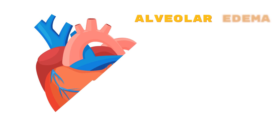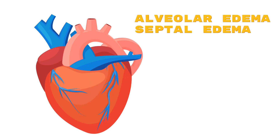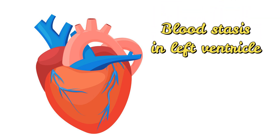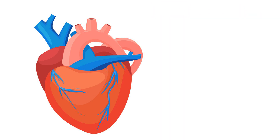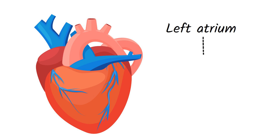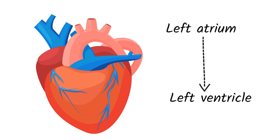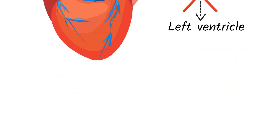A and B stand for edema — that's alveolar edema and septal edema. In heart failure, when the left heart fails there's stasis of blood in the left ventricle, and this creates an increase in the left ventricle pressure above normal. So it's hard for the blood to flow from the left atrium to the left ventricle, and blood will be pooled in the left system up until the lung vessels.